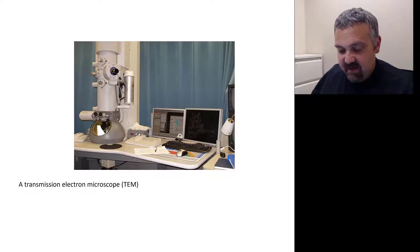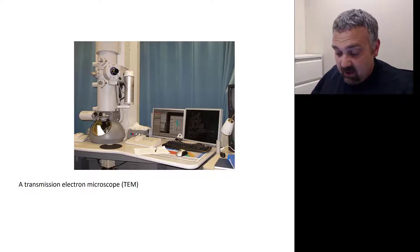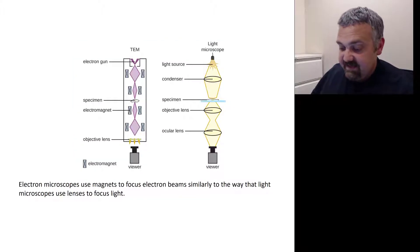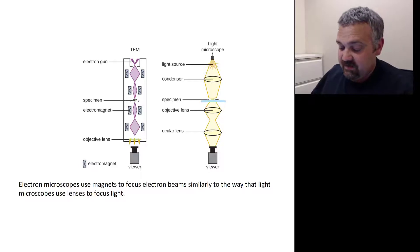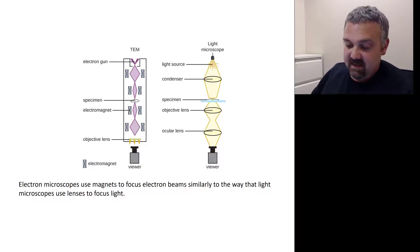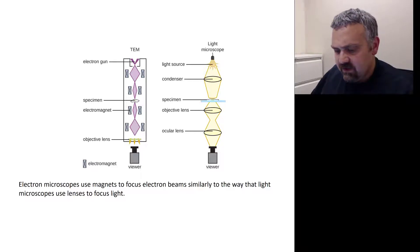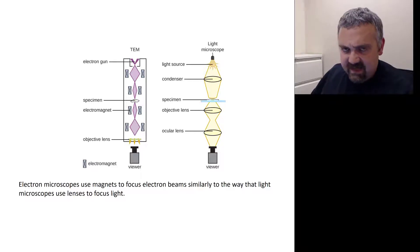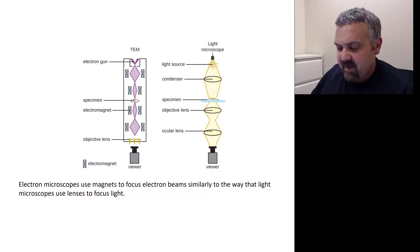This is an actual transmission electron microscope. They obviously look different than anything you've probably worked with because they are different. The light microscope uses lenses to bend and focus light rays to magnify the image, but there aren't lenses in an electron microscope. We'll look at the transmission electron microscope, the TEM, versus the scanning electron microscope, the SEM, in just a moment.